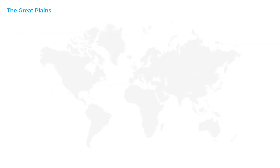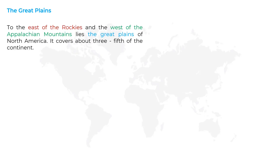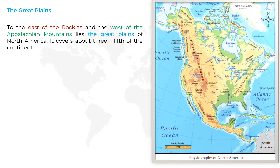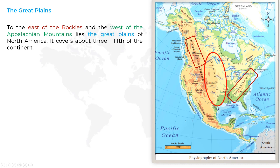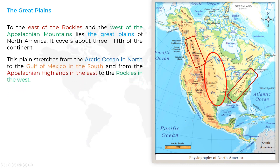Next, we are going to learn about the Great Plains of North America. To the east of the Rockies and the west of the Appalachian Mountains lies the Great Plains of North America, covering about three-fifths of the continent. Here on the map, the Rocky Mountains are on one side and the Appalachian Mountains on the other, and the area in between is known as the Great Plains.